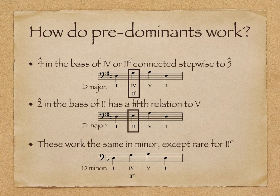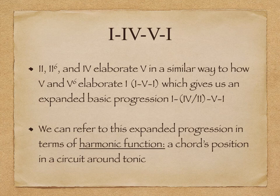Predominant chords work the same in minor, but it would be very rare to see a diminished chord built on 2 — you almost always will see it in first inversion. So 2, 2-6, and 4 elaborate 5 in a similar way to how 5 and 5-6 elaborate 1, as in our 1-5-1 progression.